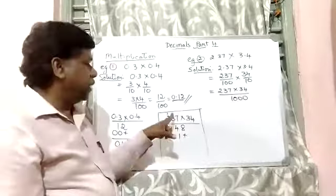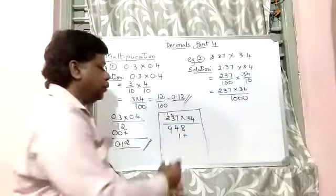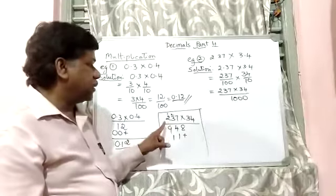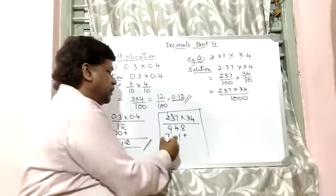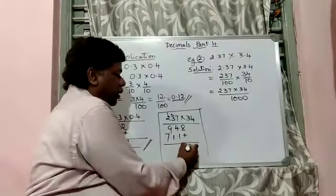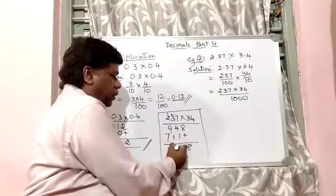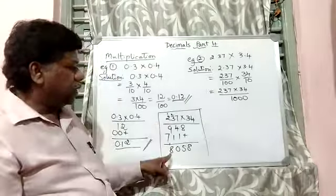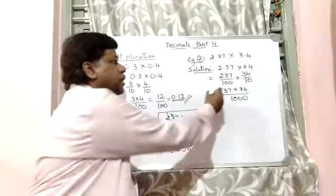3 times 3 is 9. Plus 2. 11. 1 carry. 3 twice is 6. Plus 1 is 7. Add it. 8. 5. 10. 1 carry here. 8. So I am going to get 8,058 when I multiply this.